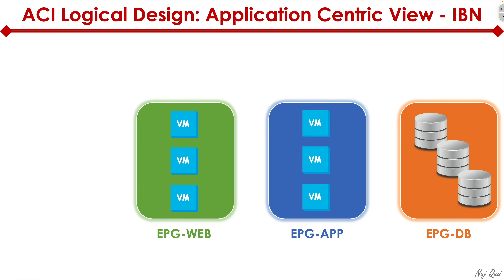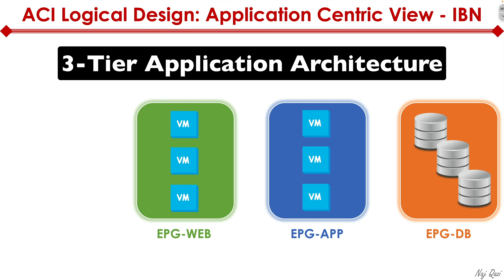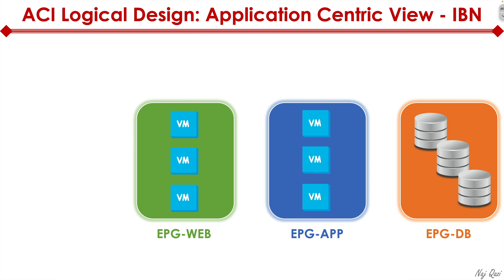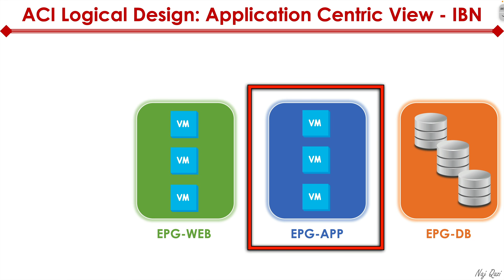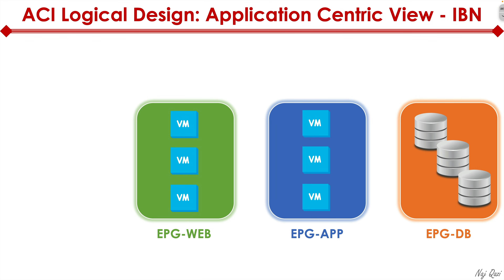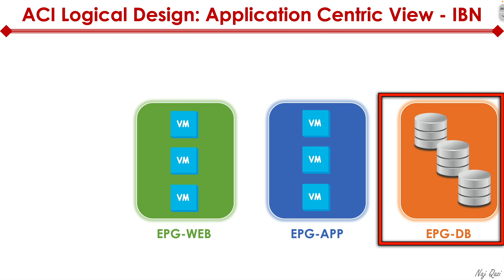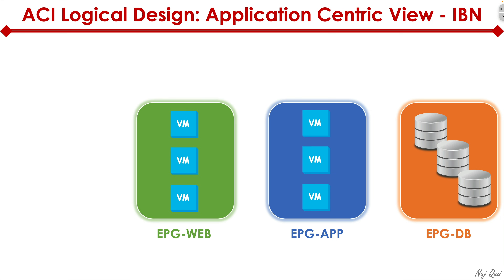To help understand ACI logical constructs, think of a typical web application. It has a three-tier application architecture — not to be confused with a three-tier network architecture. A typical web application has a web tier where users connect. Then there's an app tier handling dynamic elements — for example, if you go to Gmail, the dynamic email elements are presented through the app tier. And the third tier is the database tier, where all the information is stored, like your email profile and data.